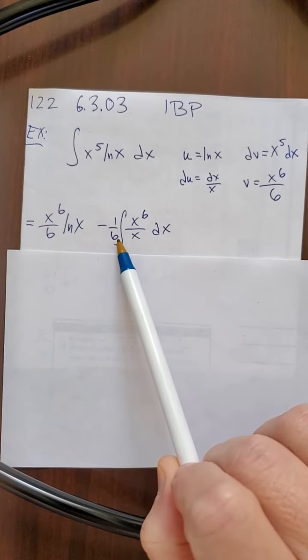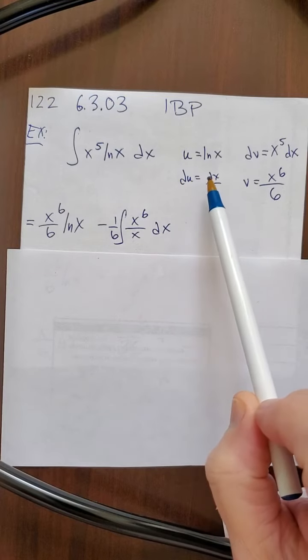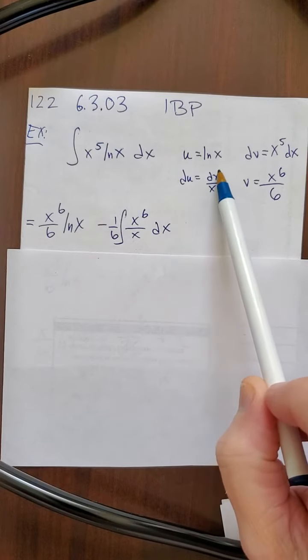Notice I pulled the 1/6 out as a constant. And I have v times du. So du is dx over x.